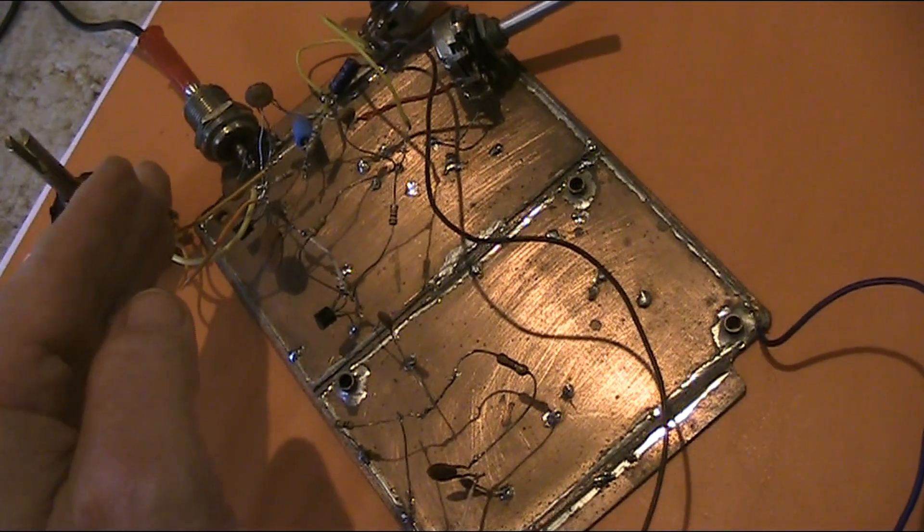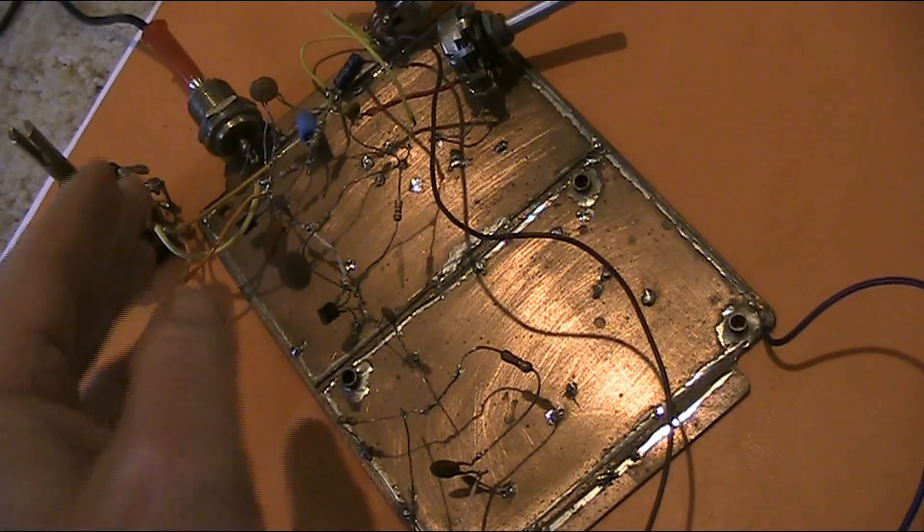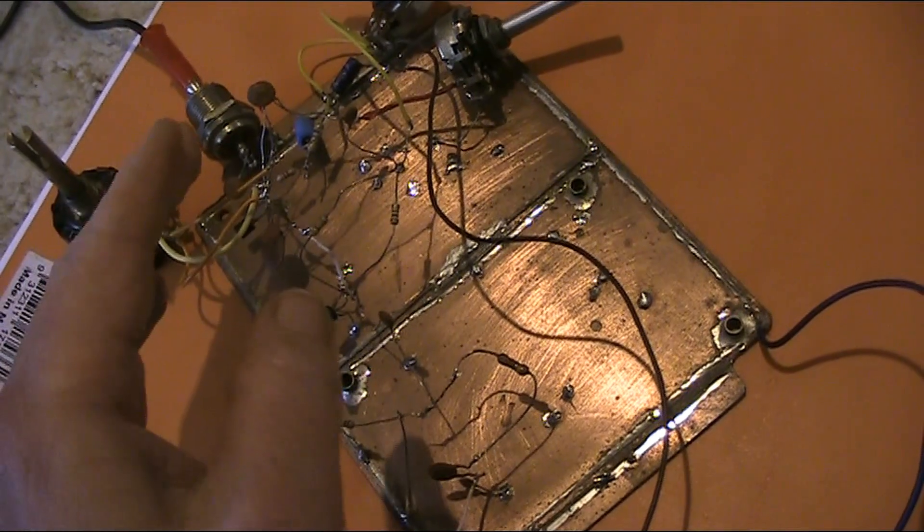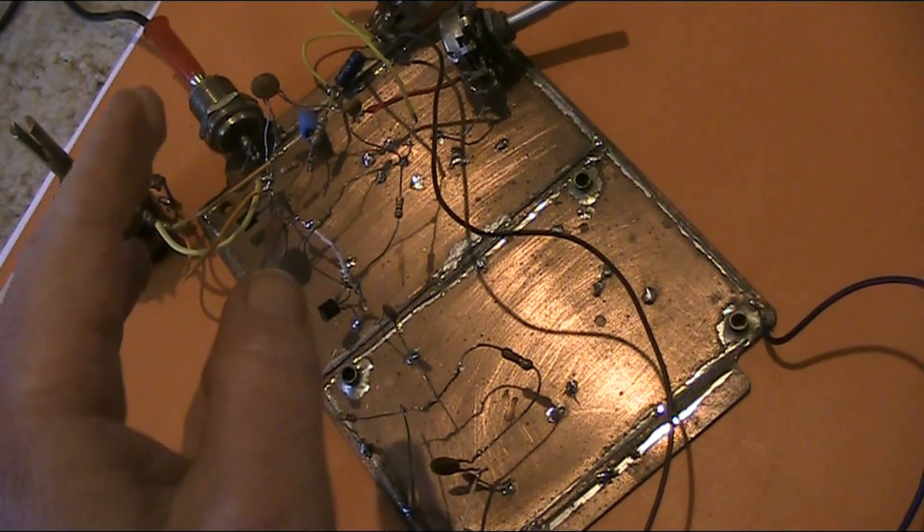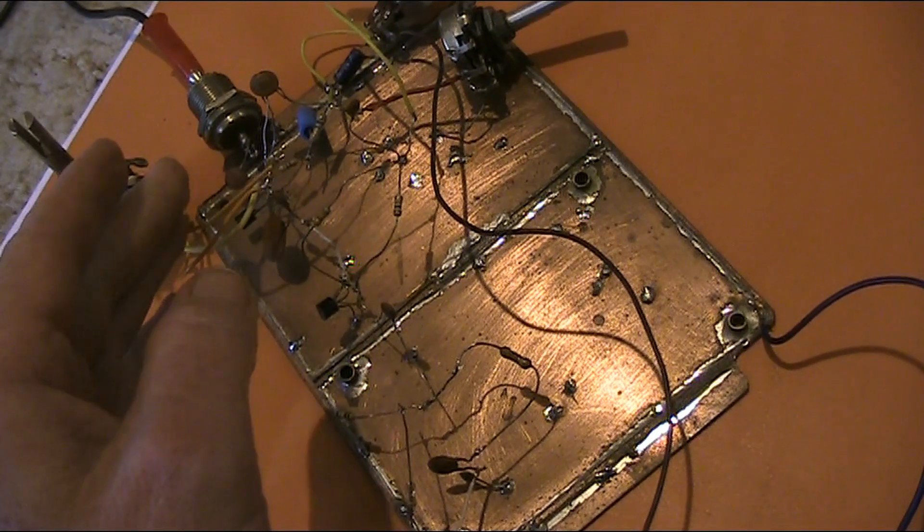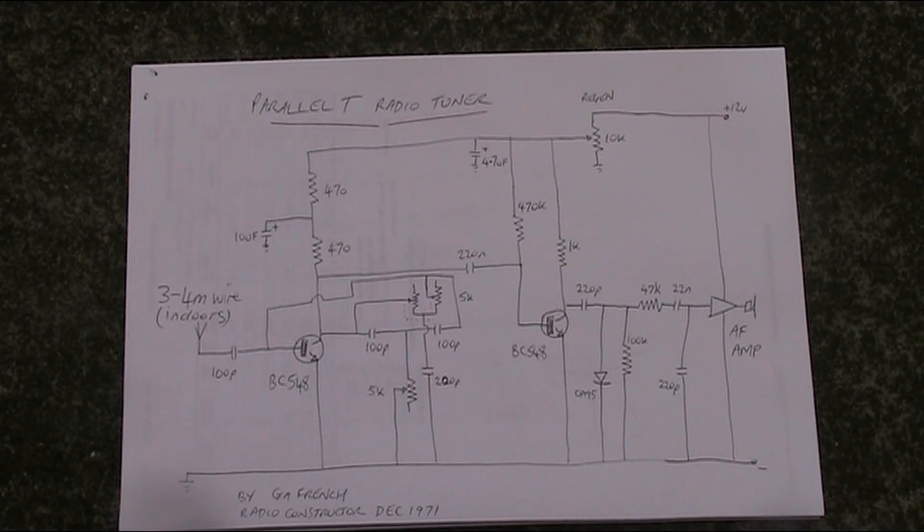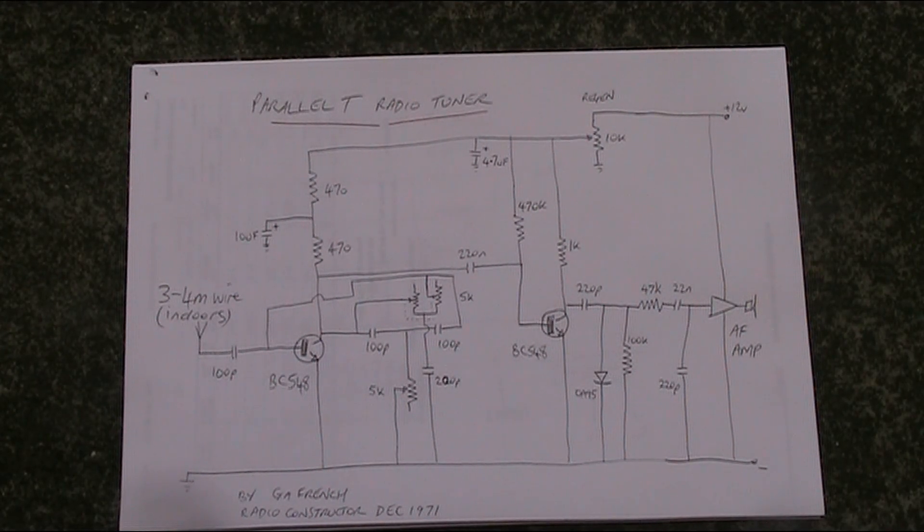So that's the parallel T receiver. It does work. Not the greatest of selectivity. But it does prove that you don't need an inductor to be able to select signals with this unique circuit. Let me know what you think, and if you do build it, then share your results in the comments below.